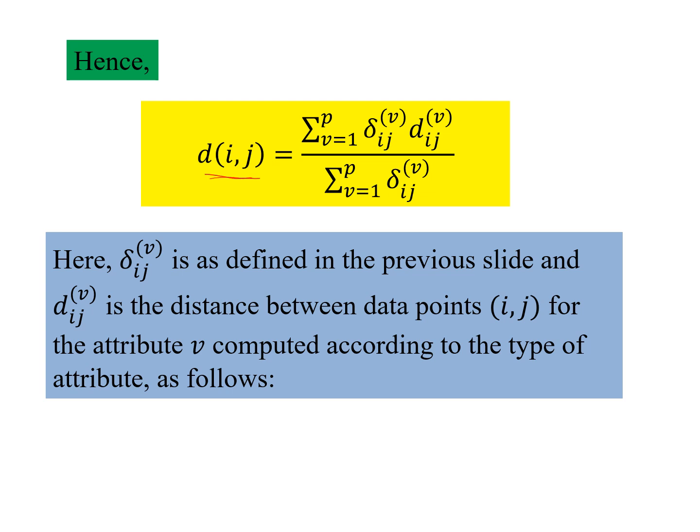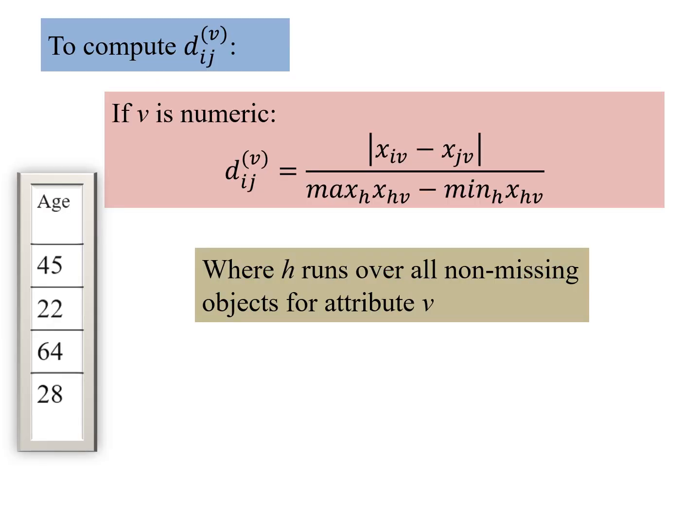Now what is this dij v? What we mentioned about the distance between attributes, attribute-wise.